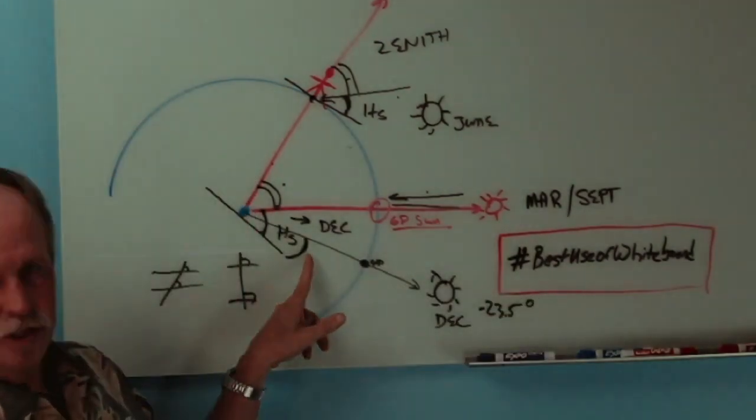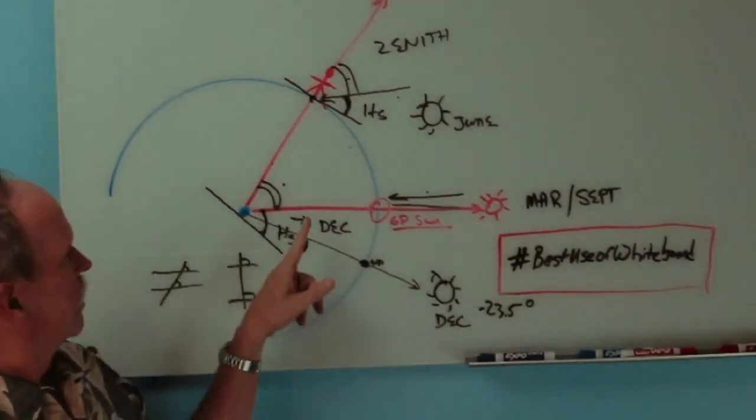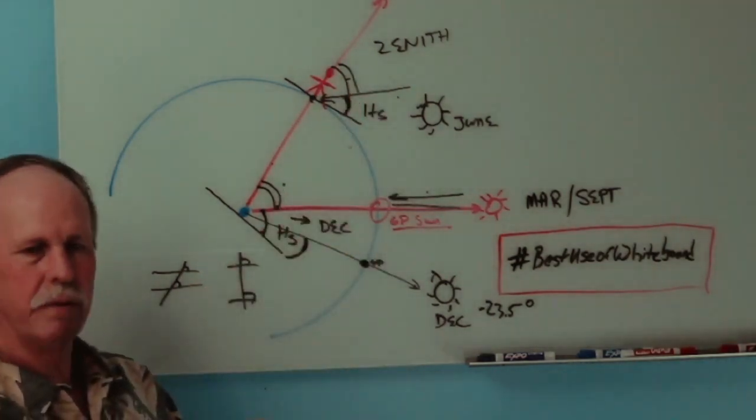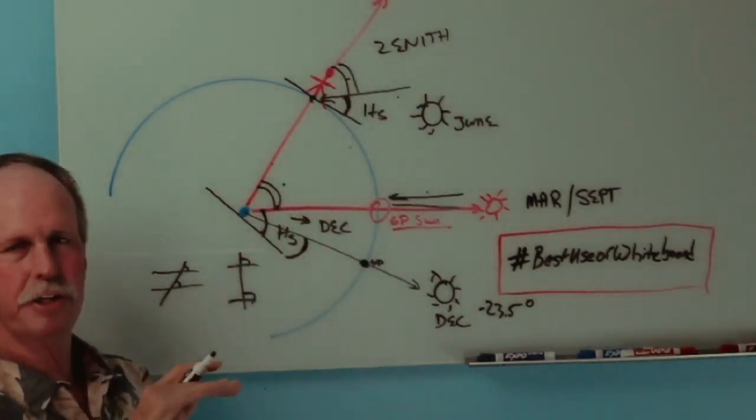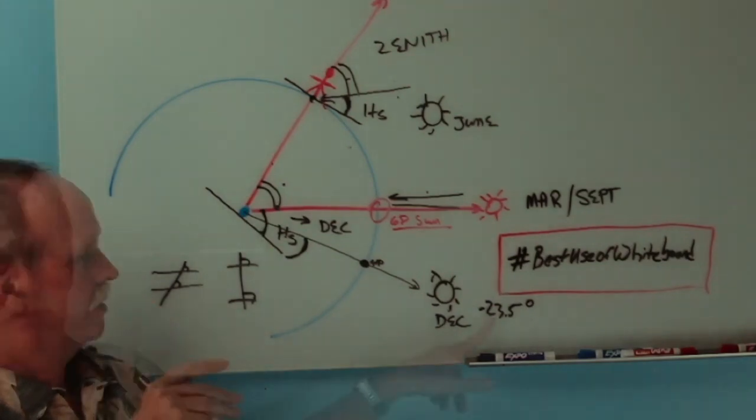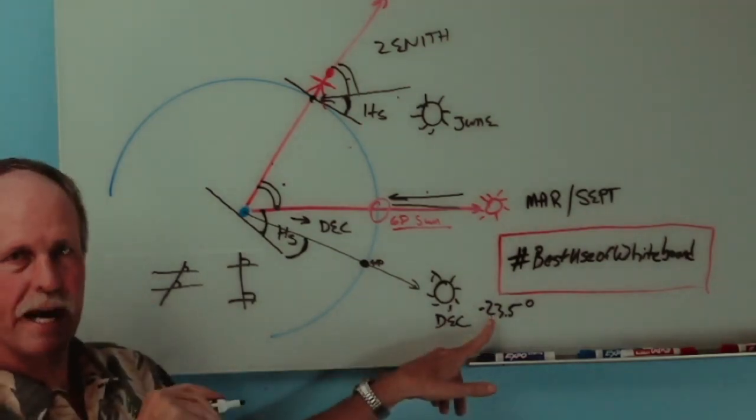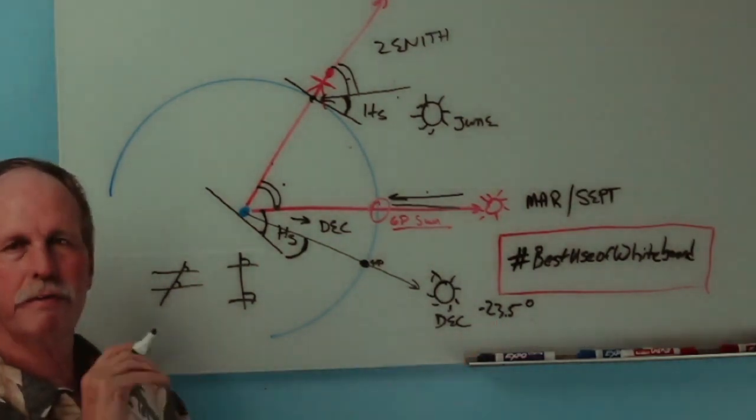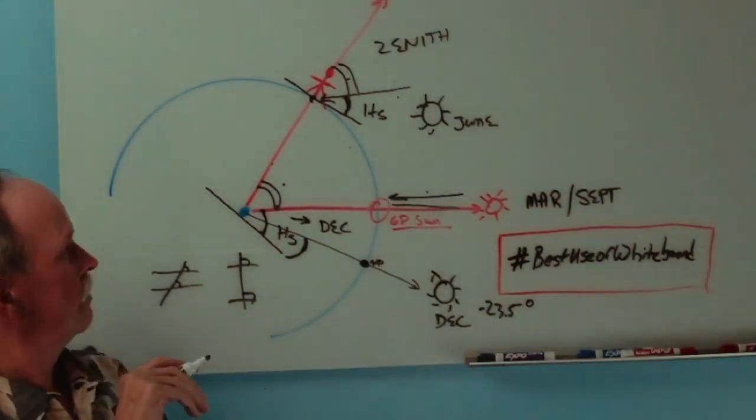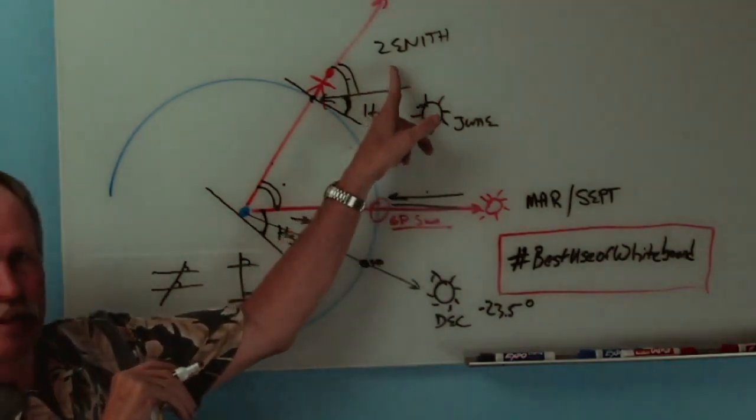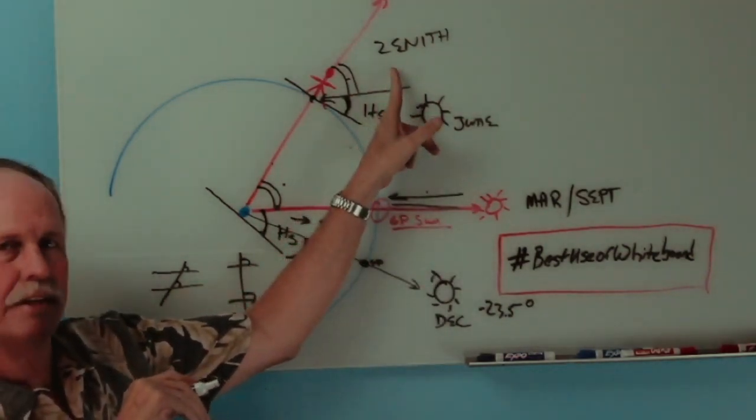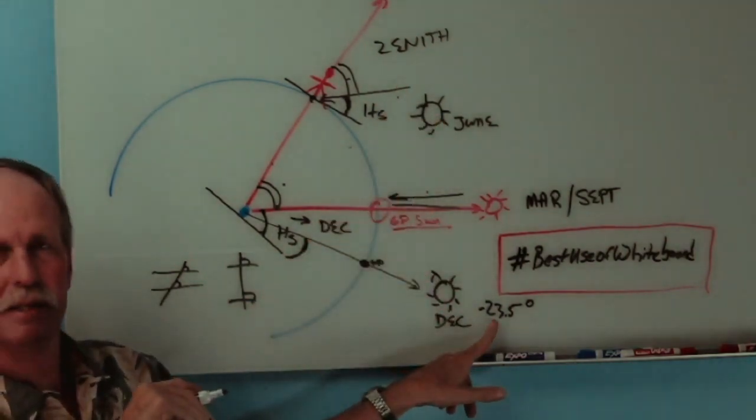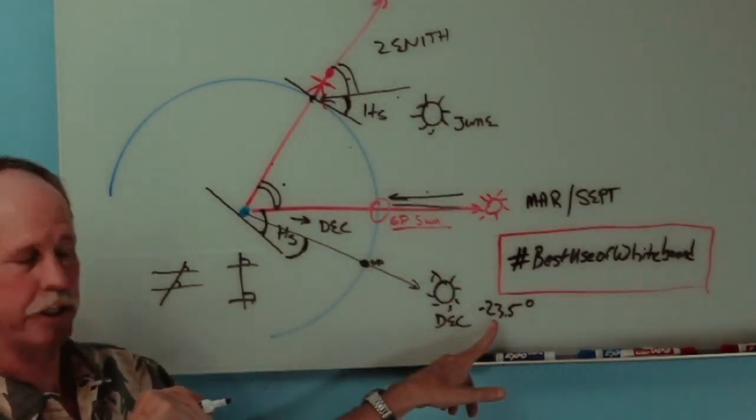So we're going to measure this distance, and we're going to subtract it from 90. And that will give us a number that is larger than our latitude. Why? Because we have to subtract the declination. So in other words, if we were at 40 degrees north latitude, when we found our zenith angle, it wouldn't be 40 degrees. It would be 63 and a half degrees. We would have to subtract the 23 and a half degree declination.